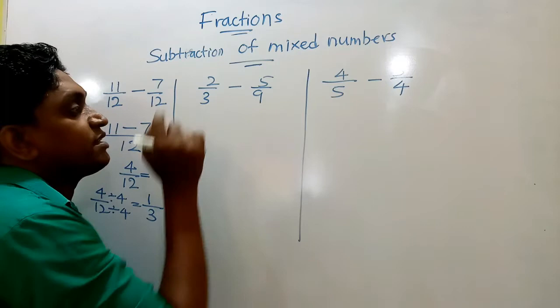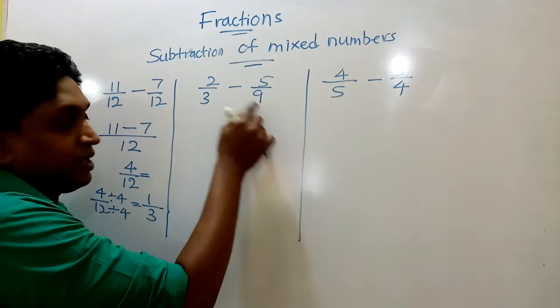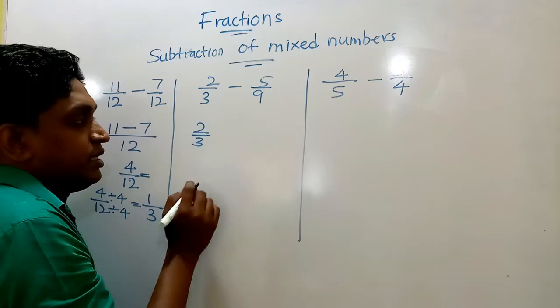But our second example, as you learned in grade 6, you can see now denominators are different. But we know 3 and 9 means 3 can be converted to 9. So I write now a fraction equivalent to this 2 over 3 having denominator 9.